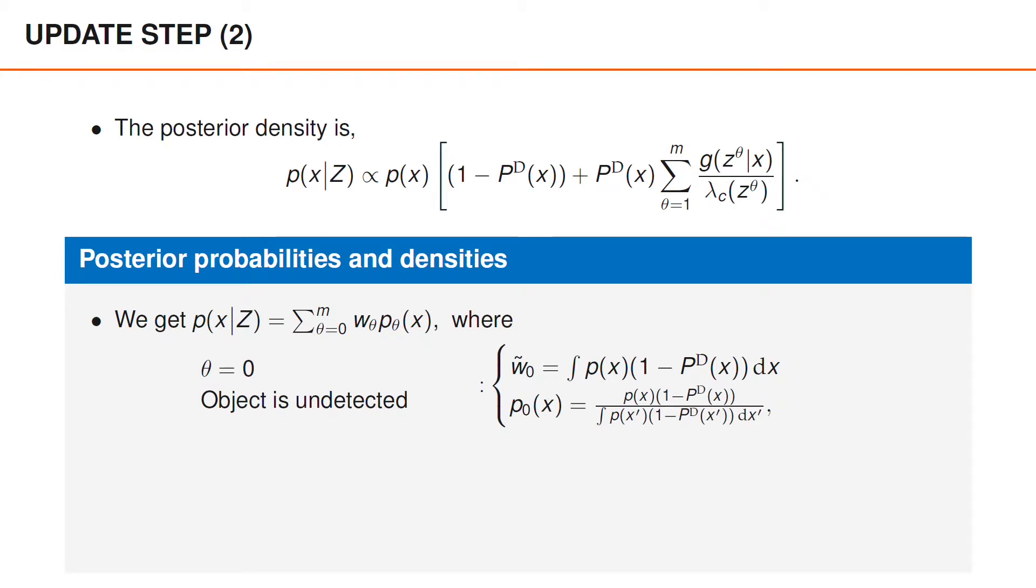In the video where we studied how to normalize mixtures of densities, the unnormalized weight for the individual term was just the integral of the original function. For the hypothesis that θ equals 0, which means that the object is undetected, the original function is p(x) times (1 - P^D(x)), and the unnormalized weight w̃_0 is therefore just the integral of that function.